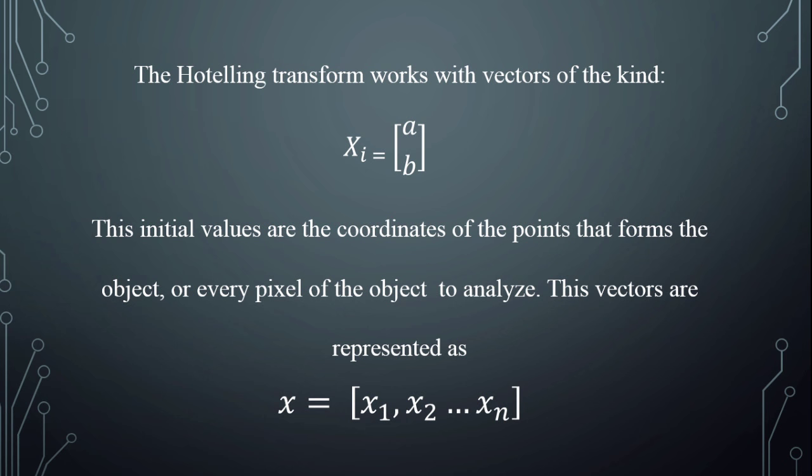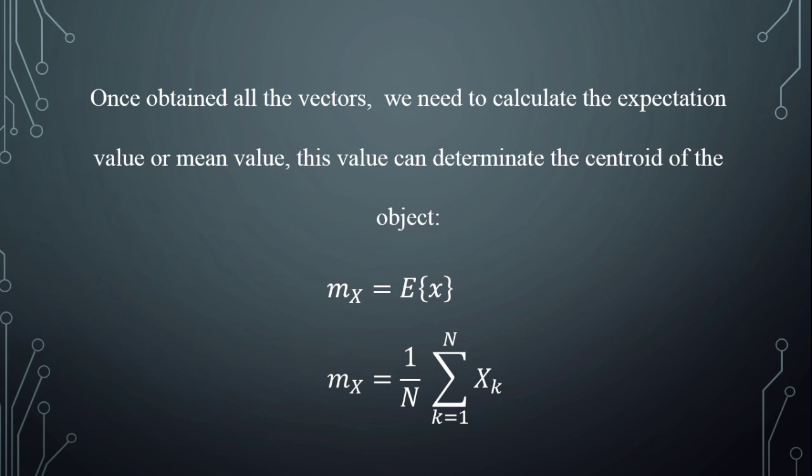Once all the vectors are obtained, we need to calculate the expectation value or mean value. This value determines the centroid of the object. The formula is: mx equals the expectation value of x, or mx equals 1 over n times the sum of xT from xT equal to 1 to n.